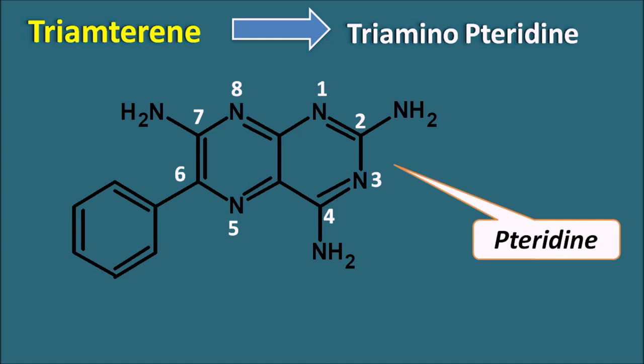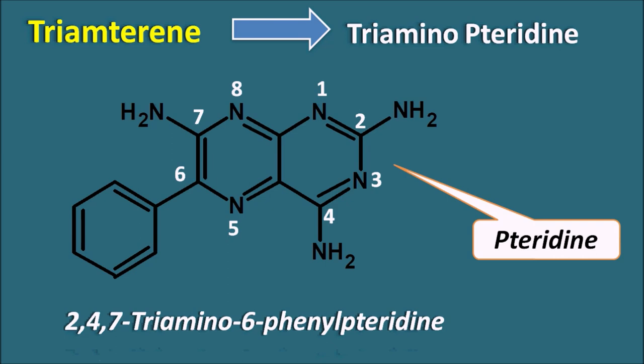The name of triamterene is 2,4,7-triamino-6-phenyl-pteridine. So triamterene is a triaminopteridine with three amino groups at the second, fourth, and seventh positions.